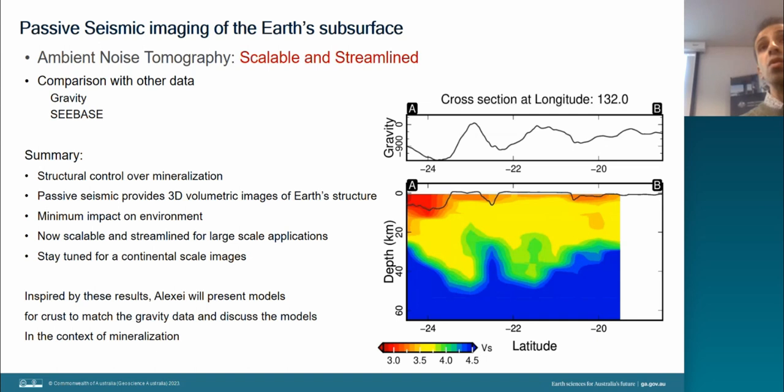So I want to summarize here about what we have done. Take home messages: structure control has a control over mineralization. Passive seismic provides 3D volumetric images of the crust. In this case, ambient noise as I've shown you, is a minimum impact on environment. It's now scalable and streamlined because we have automated the method. And stay tuned for the continental image that we will show by the end of EFTF2. And inspired by these results over here, Alexey will present models for the crust that match the gravity data and discuss these models in the context of mineralization. And I hand over to Alexey. Thank you.